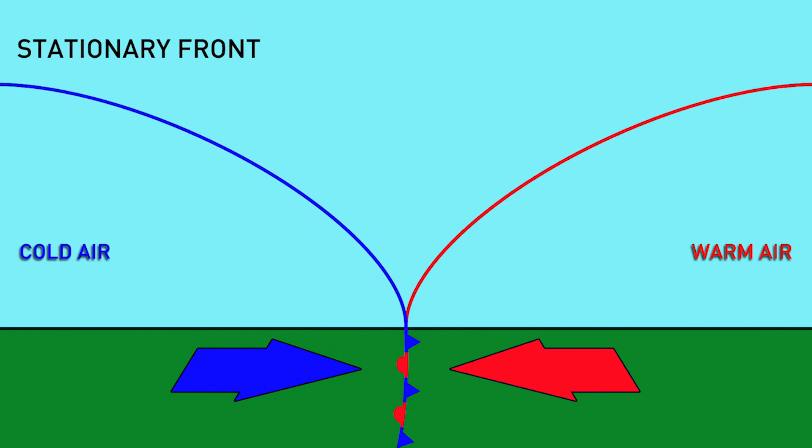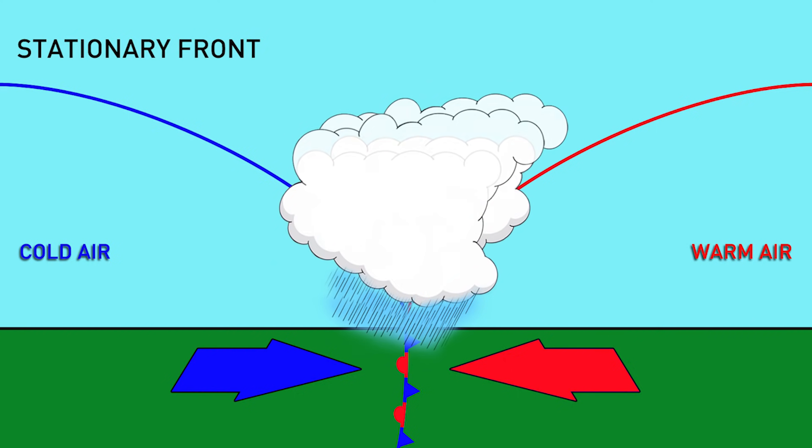We don't necessarily need moving air masses, though. If there is an abrupt boundary between two air masses, but neither is intruding into the other space, we have a stationary front. This can result in the same kind of weather associated with a warm front, but which can last for much longer, sometimes for days at a time.